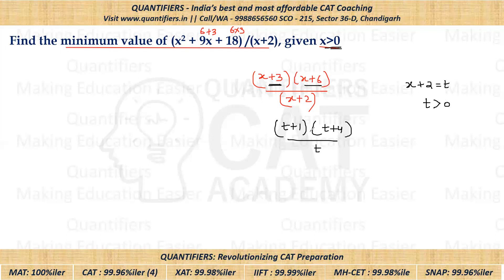Now let's simplify this numerator part. If we simplify this numerator, we'll get T² + 5T + 4, whole divided by T. Now I am dividing each term by T. So in that case, I'll be getting T + 5 + 4/T.